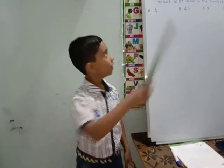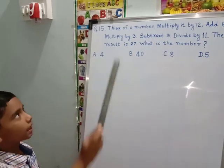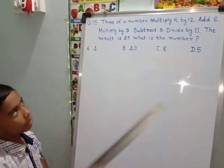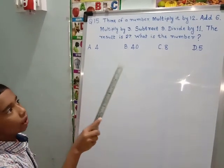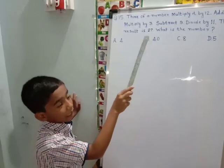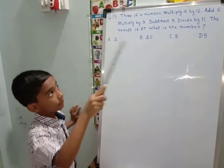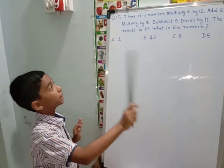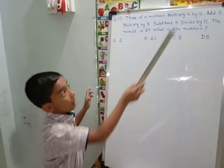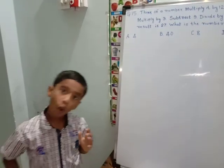Next question: think of a number. Multiply by 12. Add 6. Multiply by 3. Subtract 9. Divide by 11. The result is 27. What is the number? We have to take a number from the four options and check by doing the whole operation.